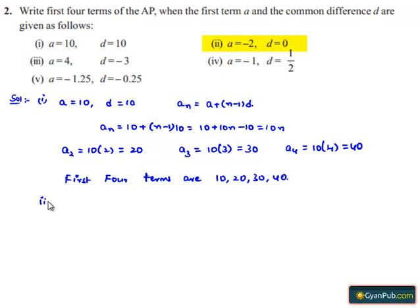Now moving on to the second bit. Here, the first term a is -2 and d = 0.